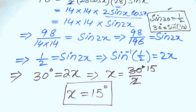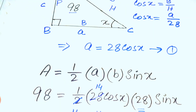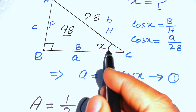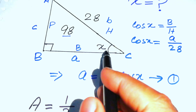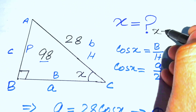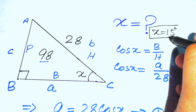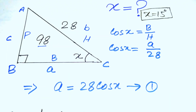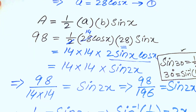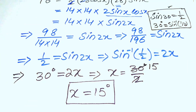Looking back at the given triangle, we needed to find the value of angle x, and we have found that x = 15°. This is our final answer. Thank you so much for watching this video — please subscribe to my channel for more exciting videos.